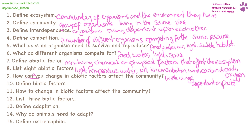Biotic factors are the living parts of an ecosystem. A change in the levels of food, the levels of predators or pathogens in a community can have a devastating or transformative effect on an ecosystem. Three biotic factors could be food, predators, or pathogens.